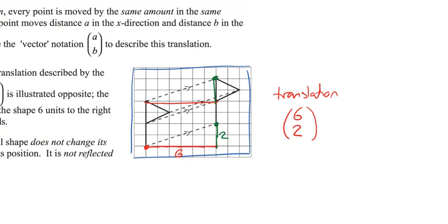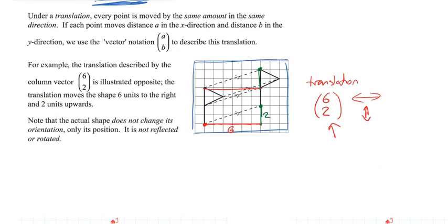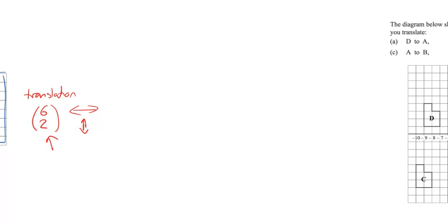So we define it with this thing called a column vector, and the top number means a movement left and right, so horizontal, and the lower number means a movement up and down, like vertical. Now, to the right is a positive direction, so six is a positive number, but if it moves six to the left, I would be using a negative six. Or if I move down, I would be using a minus two rather than a two. So that's kind of how this is going to be working.